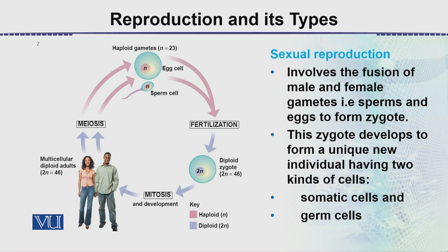The fused cell is called the zygote. This zygote develops to form a unique new individual. The individual has two types of cells: somatic cells, which are the body cells, and germ cells. The zygote is a diploid cell — half the chromosomes come from one parent and the other half from the other parent.